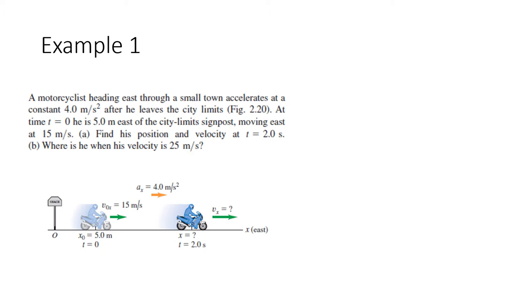At time t equals 0, he is 5 meters east of the city limit signpost, moving east at 15 meters per second. So ang pangutan na letter A, find his position and velocity at given time 2 seconds. Ang letter B, where is he when his velocity is 25 meters per second.